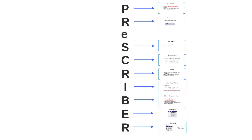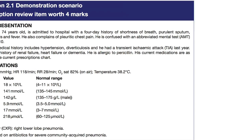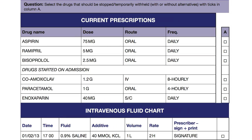So we've reached the end of the PRESCRIBER mnemonic. Let's now return to our case. To review: we have a 74-year-old penicillin-allergic man with a history of hypertension, diverticulosis and TIA who presented with haemoptysis, pneumonia, sepsis and acute renal dysfunction. Reviewing his drug chart, we are asked to mark any drugs that should be stopped or temporarily withheld. Please pause the video if you need longer to run through the PRESCRIBER system.